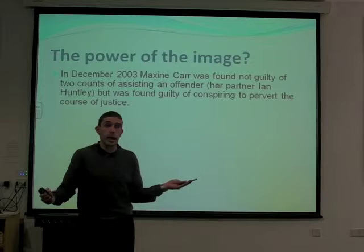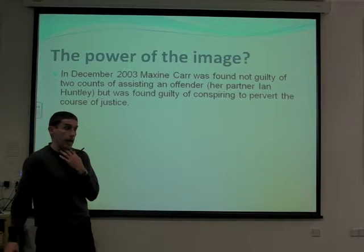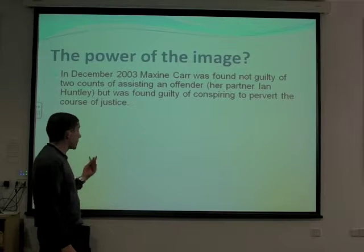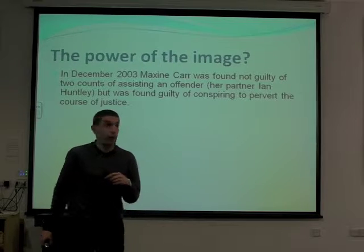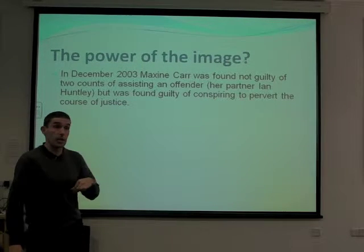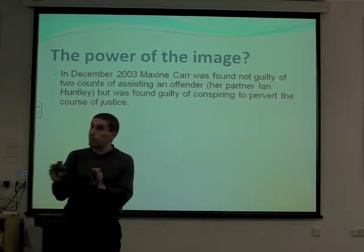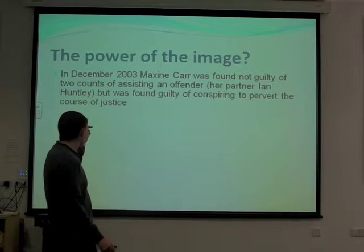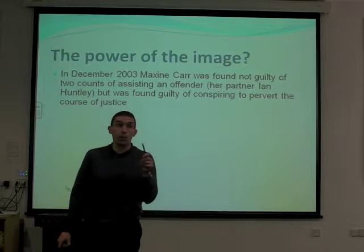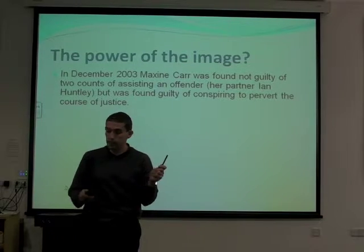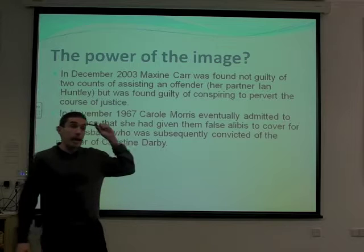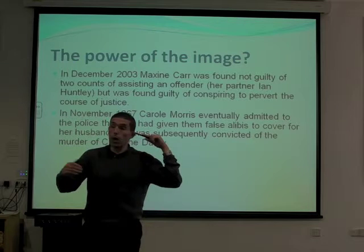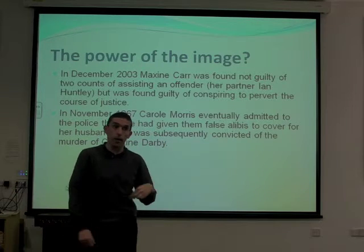A more recent example was the case involving Maxine Carr. In December 2003, Maxine Carr was found not guilty of two counts of assisting an offender. That part of Maxine Carr's trial is often forgotten about — she was actually found not guilty of two offences, but was found guilty of conspiring to pervert the course of justice. Even though you've got this awareness of Maxine Carr and the fact that she covered for her partner Ian Huntley, who was involved in the murder investigation...